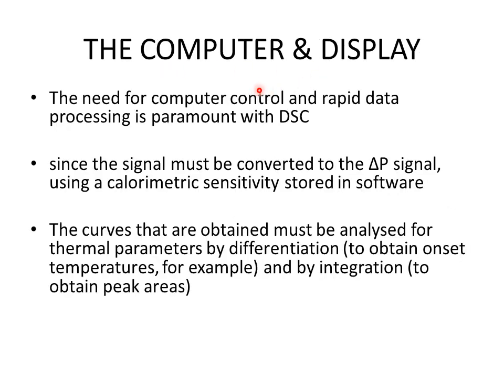Computer control and rapid data processing are essential for DSC. The signal must be converted into a Delta P signal using the calorimetric sensitivity stored in the software. The curves obtained must be analyzed for thermal parameters by differentiation — for example to obtain onset temperatures — and by integration to obtain peak areas. All of these operations are performed automatically by the system software.